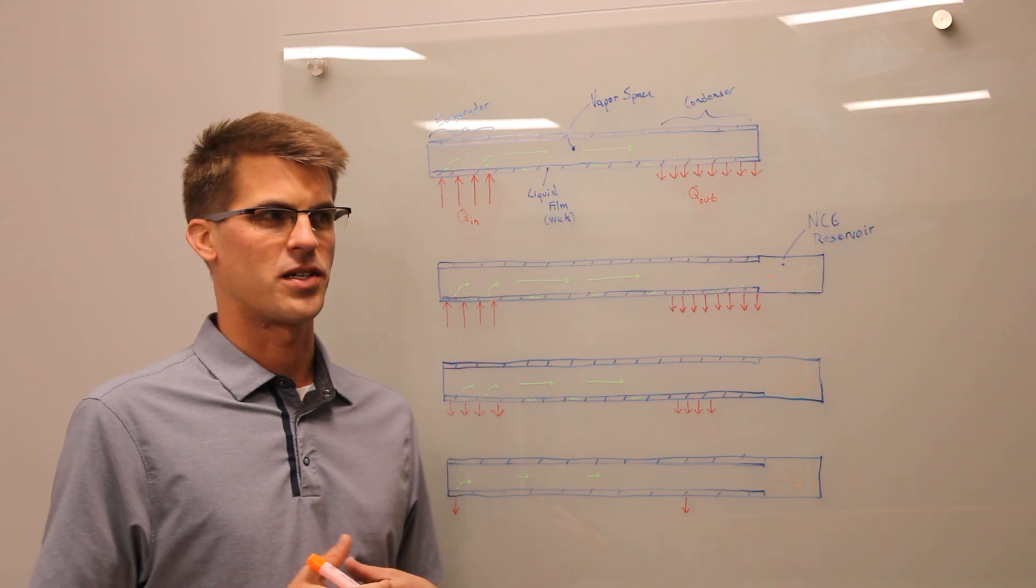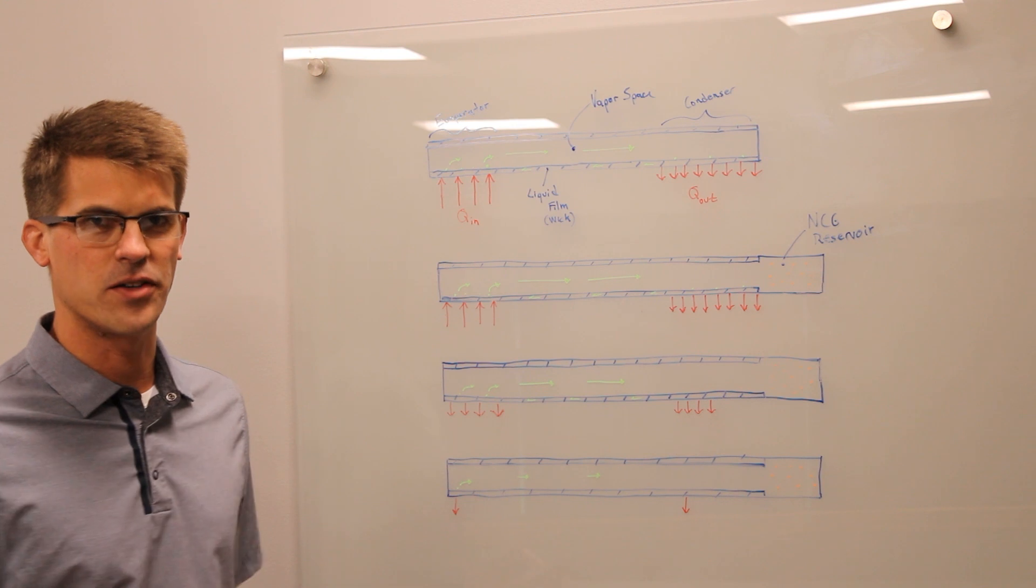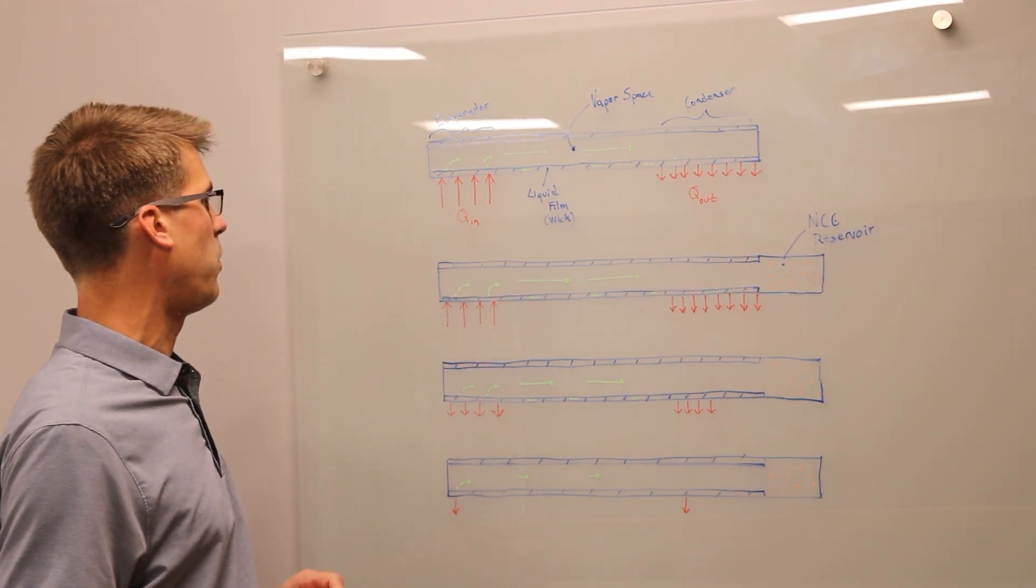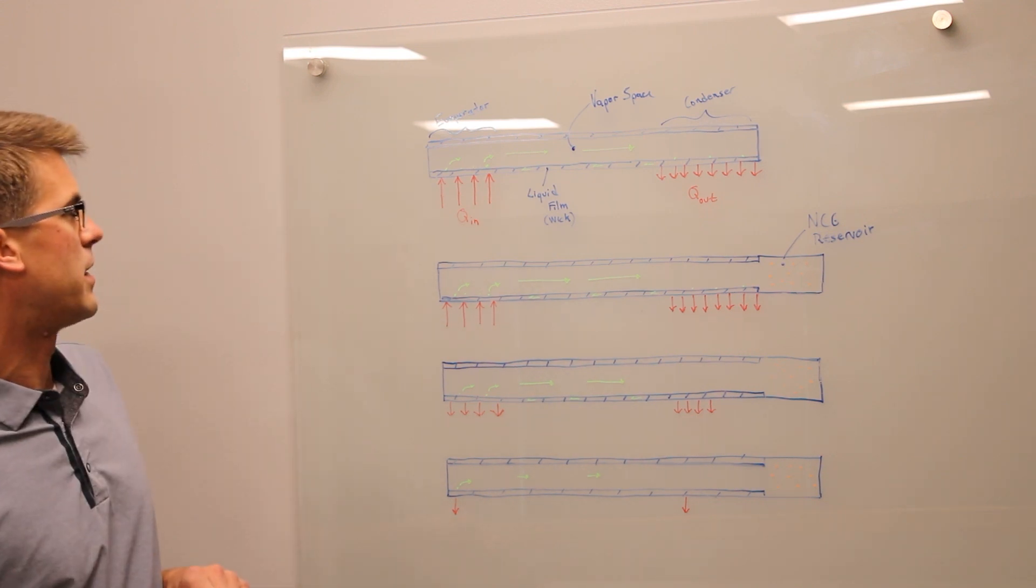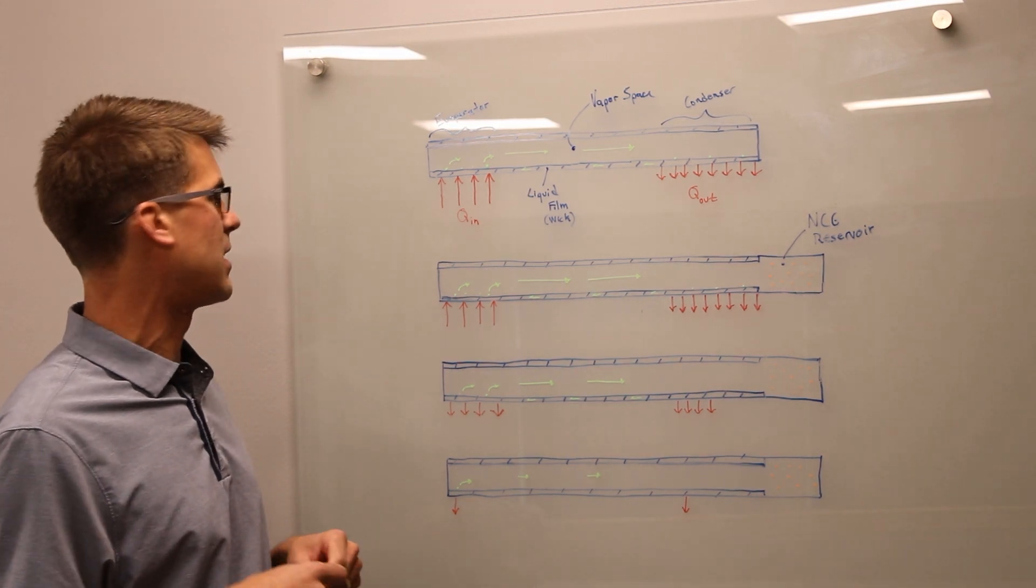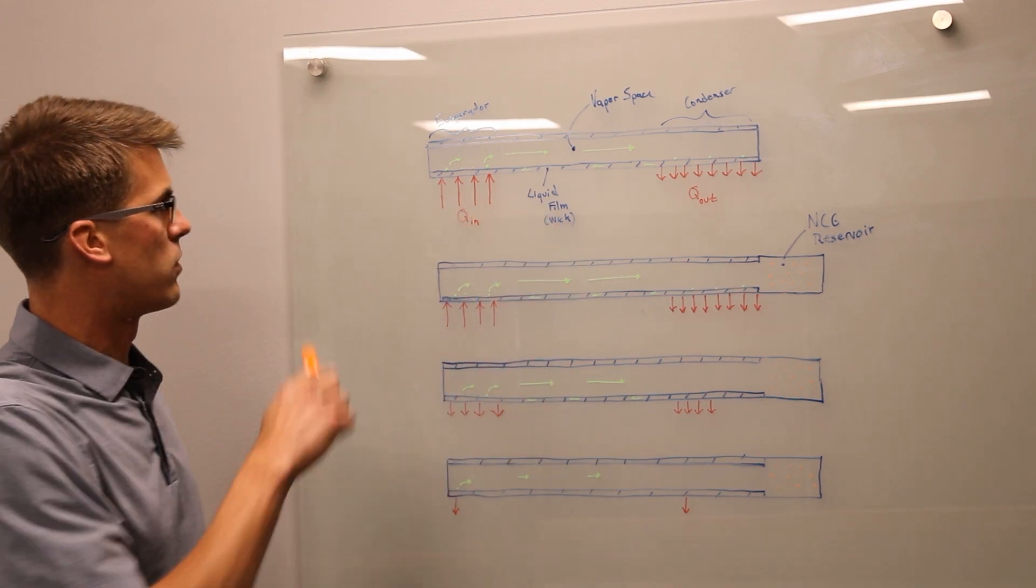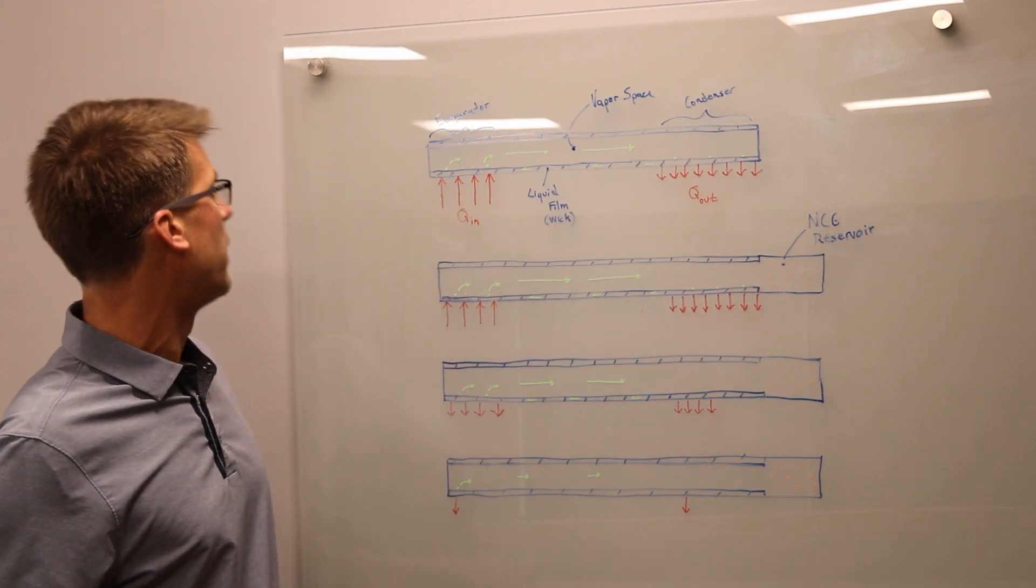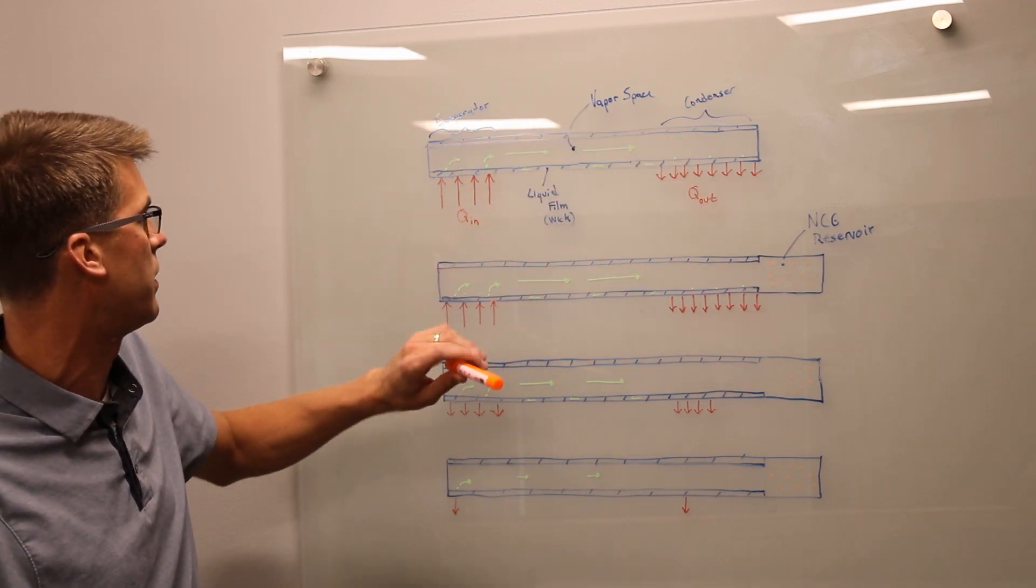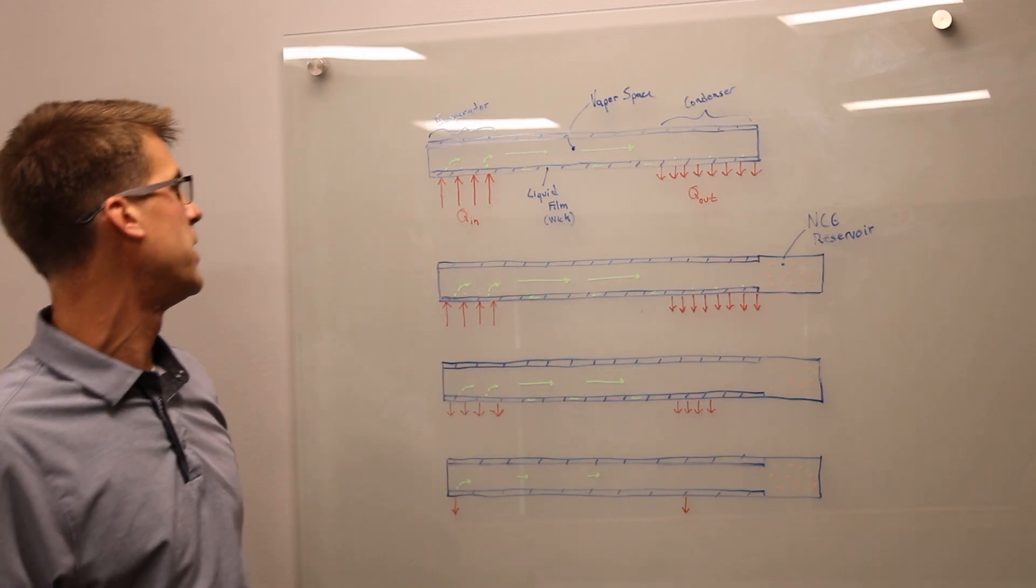To start with this, I first want to talk about CCHP, or a constant conductance heat pipe, as this is the foundation of what the VCHP is built off of. I have a couple of drawings up here on the board. So in a CCHP, this is a vacuum-sealed pressure vessel containing a working fluid which also has a wick structure which allows a return of fluid. In a constant conductance heat pipe, we have an evaporator section and a condenser section, an adiabatic section in between, and we are evaporating the working fluid in the evaporator.